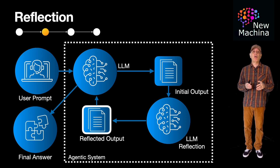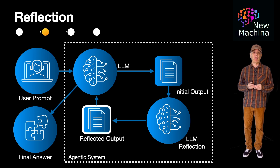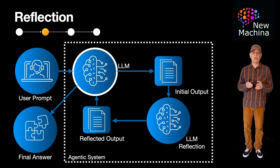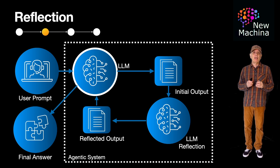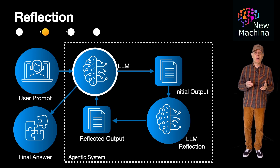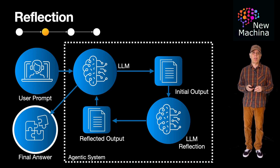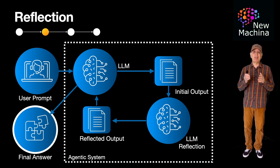The agentic workflow uses this reflection step to revise its output. The goal is to either fix mistakes or improve the quality of the original answer. In some agentic workflows, it could go through multiple reflection cycles before generating a final response. Depending on the design, the agentic workflow can present both outputs to the user or just the revised output.